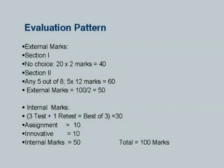The evaluation pattern for the first semester has two sections in the question paper. Section A has two-mark questions — 22 questions — carrying 40 marks total. Section B requires answering any 5 out of 8 questions, each carrying 12 marks, totalling 60 marks, for a grand total of 100 marks. For internal marks, we calculate out of 50, so external marks are divided by 2 — for example, 80 marks becomes 40.